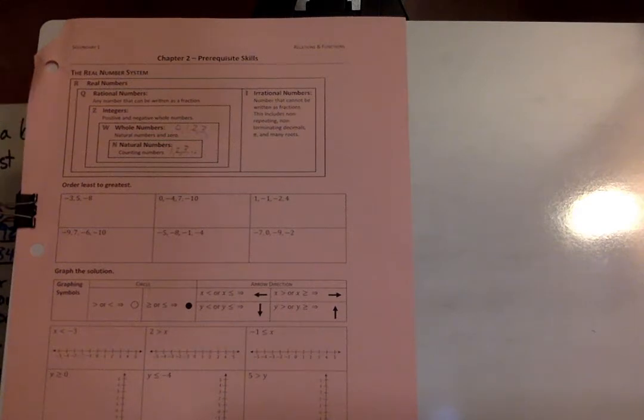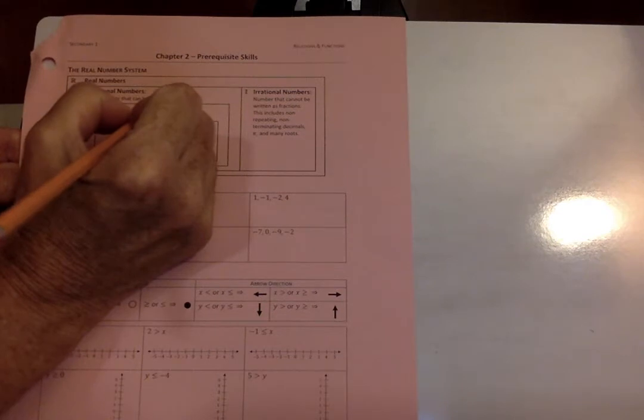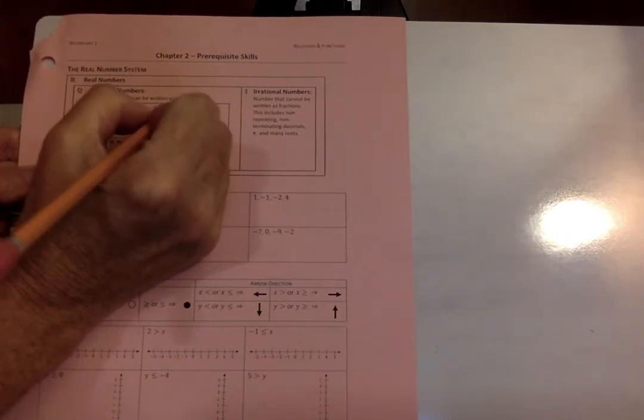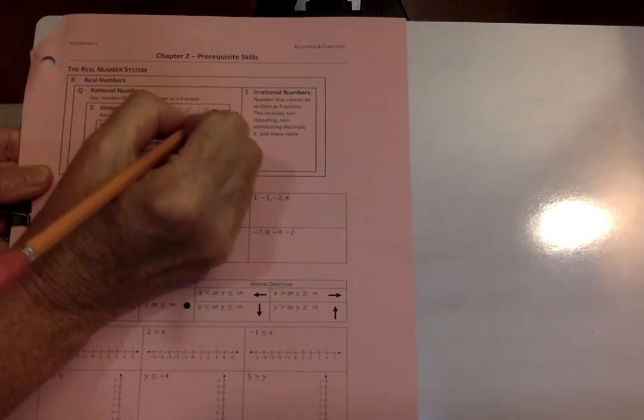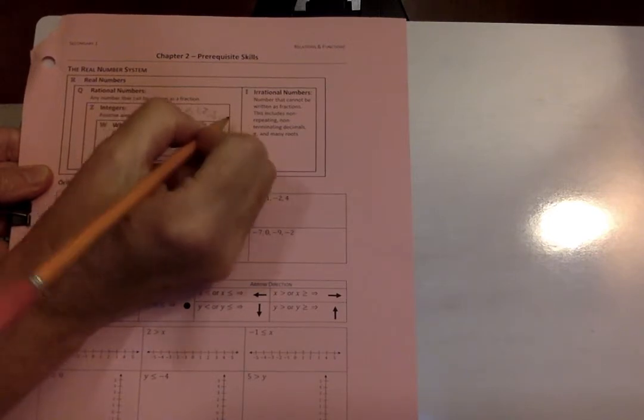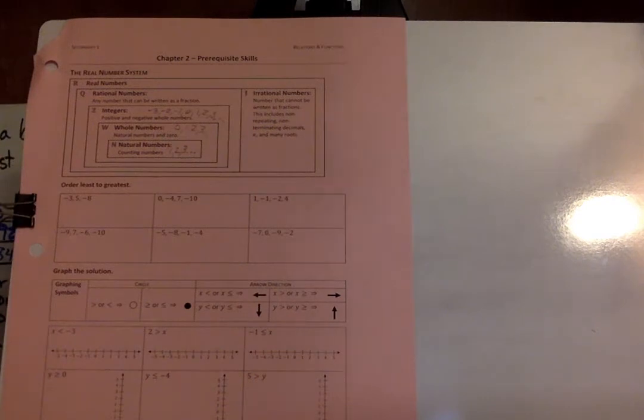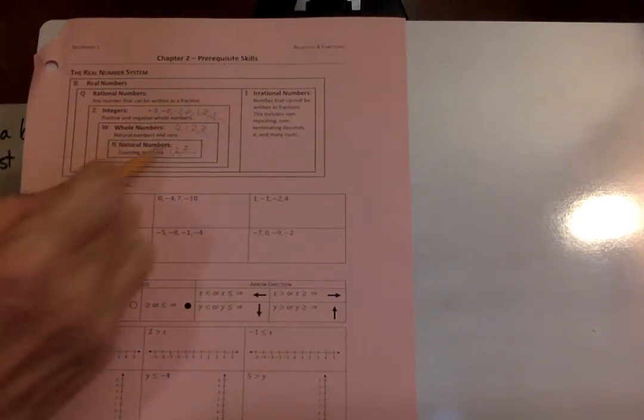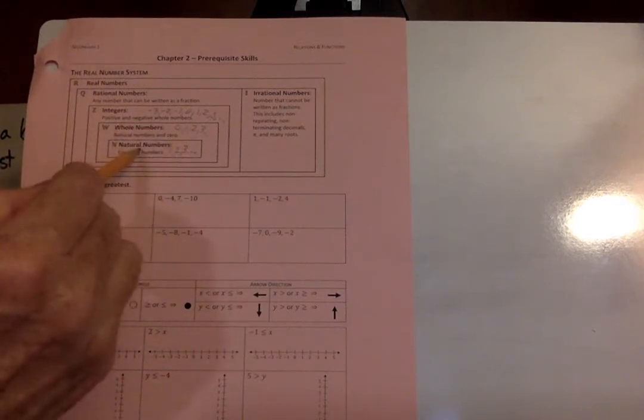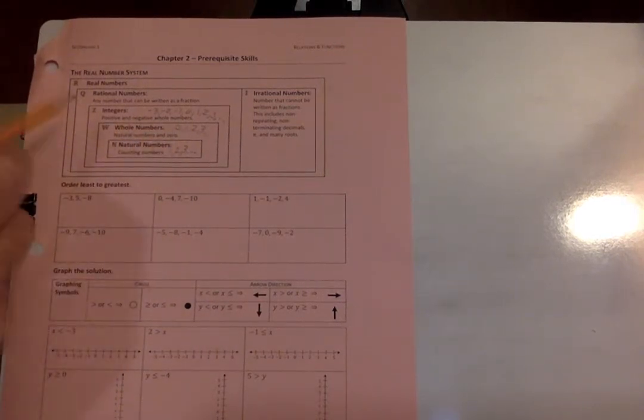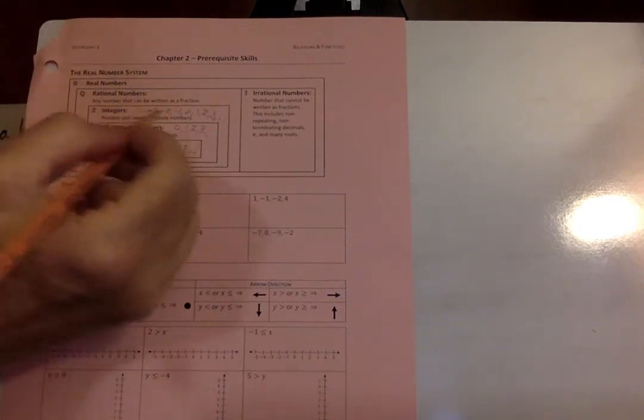Integers are positive and negative numbers, so we include all of the negative numbers and also the positive numbers. So each of these groups of numbers are getting bigger and bigger. Natural numbers are just the counting numbers. Whole numbers include all the natural numbers plus zero. Integers include positive and negative whole numbers plus zero.